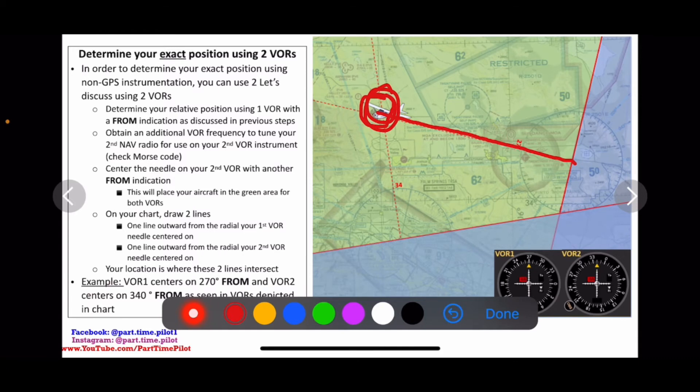Then what we're going to do is we're going to use this VOR, another VOR on nav radio two and VOR two. We're going to do the same thing. We're going to turn that OBS until we get the needle centered and a from indication.